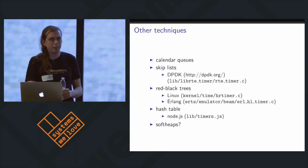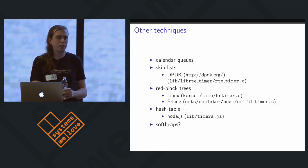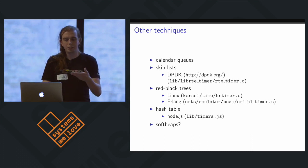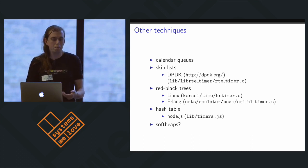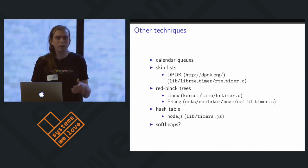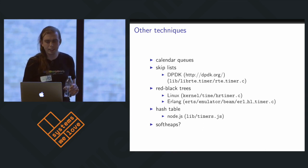There are also Chazelle's soft heaps — a really promising priority queue structure that's relatively new. They potentially provide an interesting future direction because they inherently have this kind of error bound, which might make them quite good for this kind of approximate pessimistic case. That's something worth looking into.